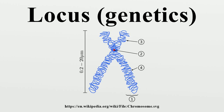A locus, in genetics, is the specific location or position of a gene DNA sequence on a chromosome. Each chromosome carries many genes; humans' estimated haploid protein coding genes are 20,000–25,000 on the 23 different chromosomes.